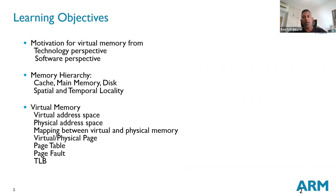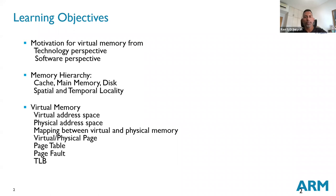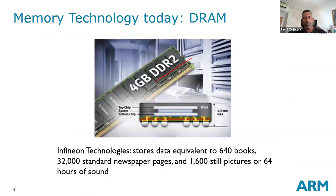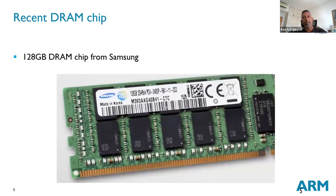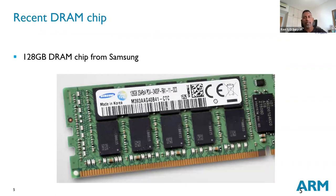We're looking at how we manage the overall memory requirements of your system with the limited actual memory you may have. These are just some historical pictures to show how far we have come since the concept of a computer system and memory was invented. In terms of growth, the capacity is increasing tremendously — around four times capacity every three years.